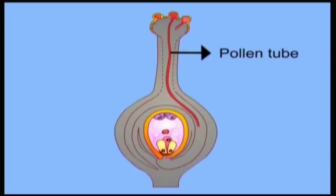This tube will have two male nuclei which migrate to the tip of the pollen tube at the time of fertilization. Usually the pollen tube enters the ovule through micropyle.